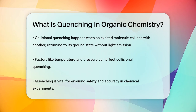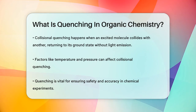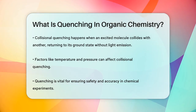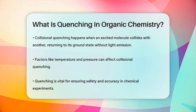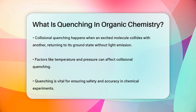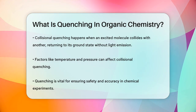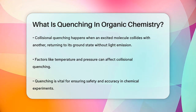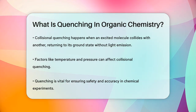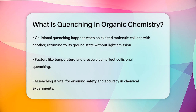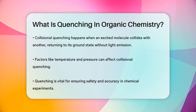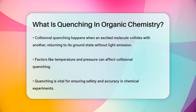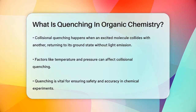In summary, quenching in organic chemistry is a critical process that helps control and stop chemical reactions, as well as reduce fluorescent intensity through various energy transfer mechanisms. It's a vital technique that ensures safety and accuracy in chemical experiments.